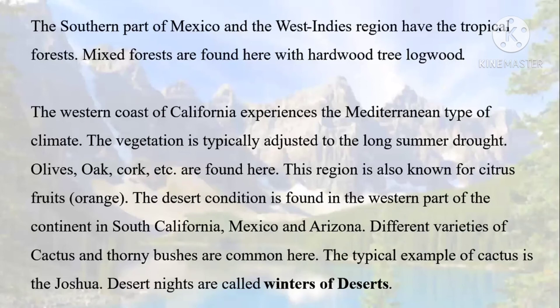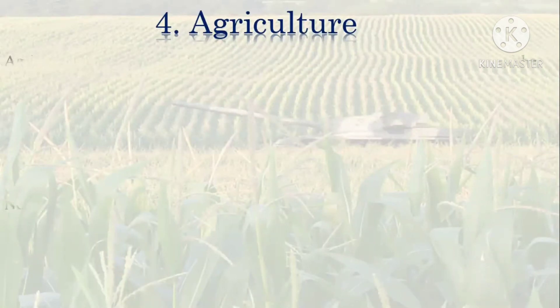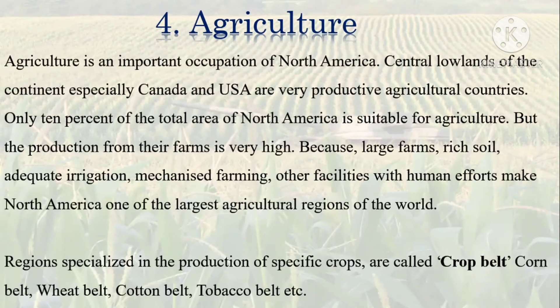Now let's study about agriculture. Agriculture is an important occupation in North America. The central lowlands, especially Canada and USA, are very productive agricultural regions. Only 10% of the total area of North America is suitable for agriculture, but production from farms is very high because of large farms, rich soil, adequate irrigation, and mechanized farming, which make North America one of the largest agricultural regions of the world.